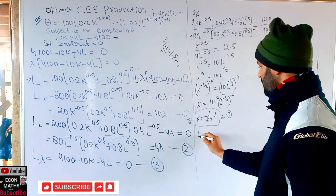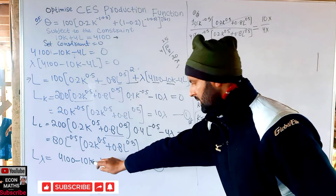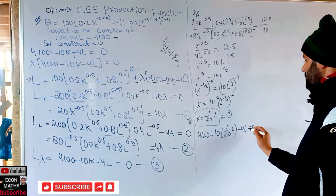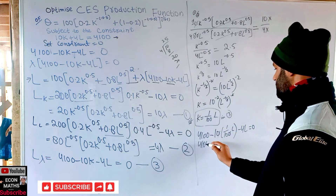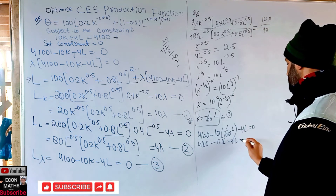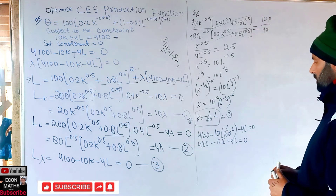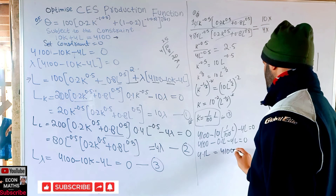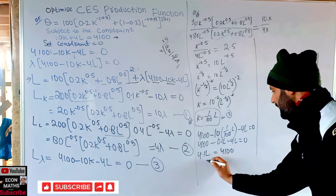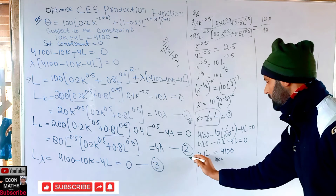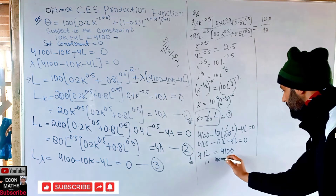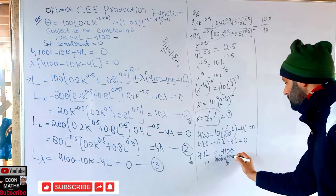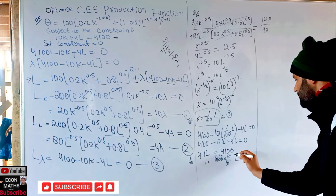Substituting K = L/100 into Equation 3: 4100 − 10 × (L/100) − 4L = 0, which gives 4100 − 0.1L − 4L = 0, so 4100 = 4.1L. Therefore L = 4100 / 4.1 = 4100 × (10/41) = 1000.